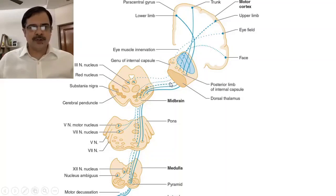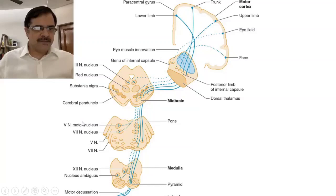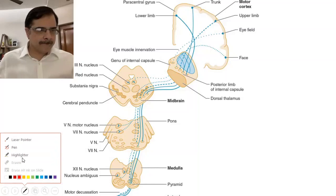The lower part of the face will be affected if there is an upper motor neuron lesion, because the lower part of the face has unilateral representation. I have intentionally drawn the motor pathways because it is mainly hemiplegia or facial plegia which is seen in a patient of stroke.